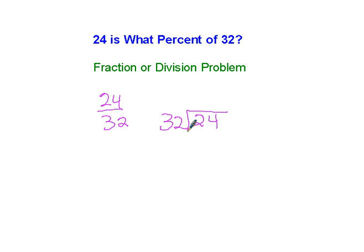This is one possible way of doing this problem. Now I'm going to put some zeros on there because 32 does not go into 24. But it does go into 240. How many times would it go into 240? Well, I'm thinking about maybe 7. Let's try that.